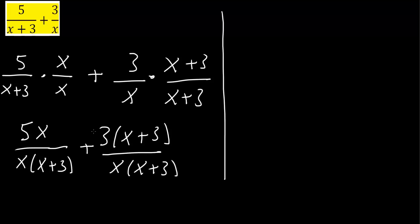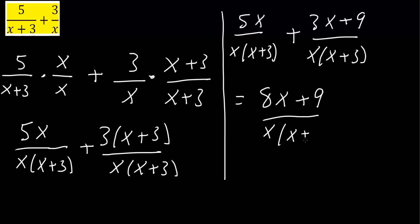So 5x will remain the same. 5x divided by x times x plus 3 plus 3 times x is 3x, 3 times 3 is 9, divided by our common denominator which was x times x plus 3. So 5x plus 3x would give us 8x plus 9 divided by our common denominator which was x times x plus 3. And that's all we need to do for this problem.